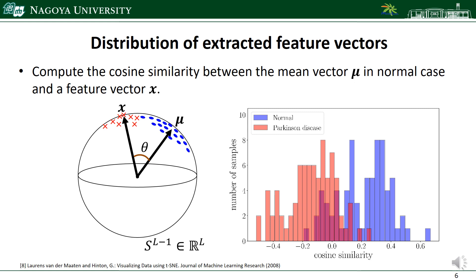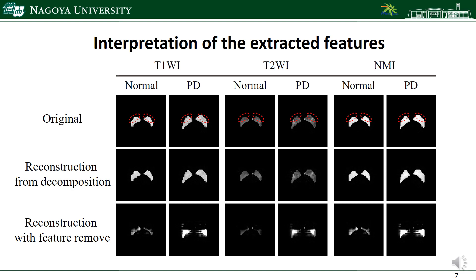This slide summarizes the interpretation of the extracted features. The top row shows the slices for the original volumetric data. The second row shows the reconstruction from the tensor decomposition. The last row shows the reconstruction from the tensor decomposition where we remove high separability features — that is, the disappeared region is the discriminative point in the classification between normal and Parkinson's disease.